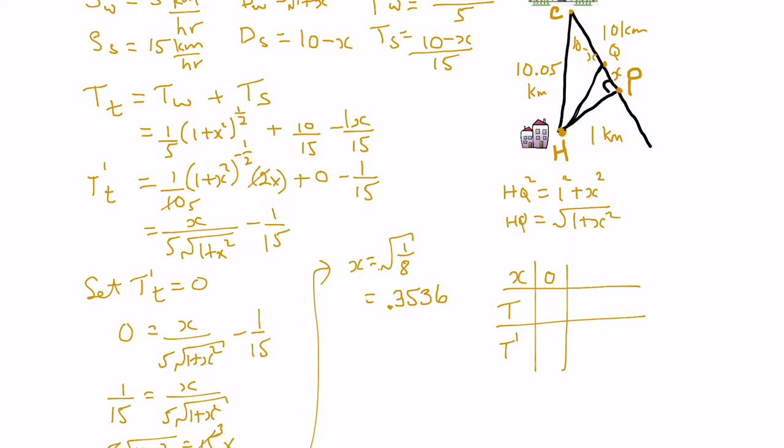The other scenario is our value that we found here, 0.3536, and that represents walking from H to Q and then taking the subway from Q into the campus.